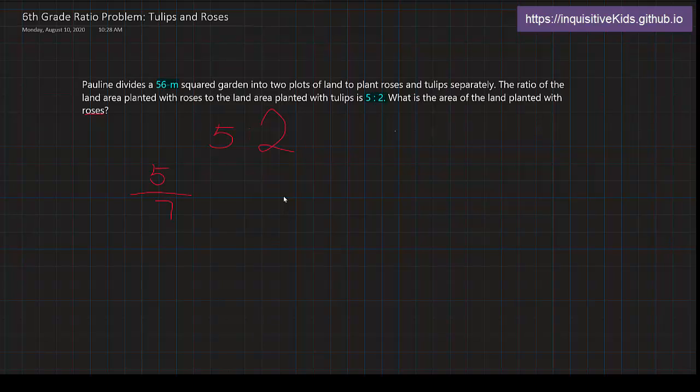We now know that we can rewrite the 5 in the ratio 5 to 2 as 5 over 7, and we know the fraction that we want to find. So now we're going to put it into the whole sentence: What is 5 sevenths of the total amount 56? To find that, we're going to multiply this with 56.